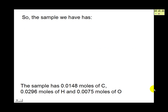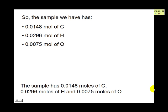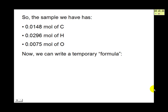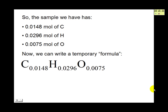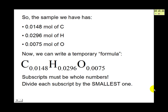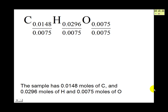To summarize, the sample has 0.0148 moles of C, 0.0296 moles of H, and 0.0075 moles of O. Since the ratio of moles is the same as the ratio of atoms, we can write a temporary formula: C0.0148 H0.0296 O0.0075. Since subscripts in a formula must be whole numbers, we divide each subscript by the smallest one, which is 0.0075.